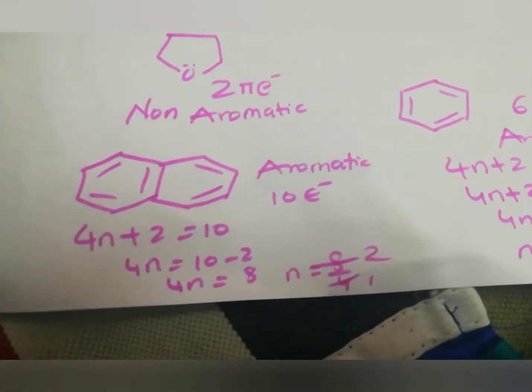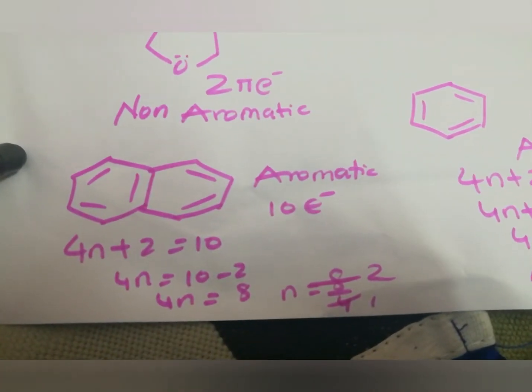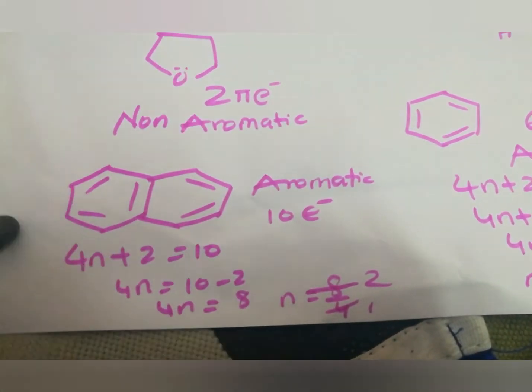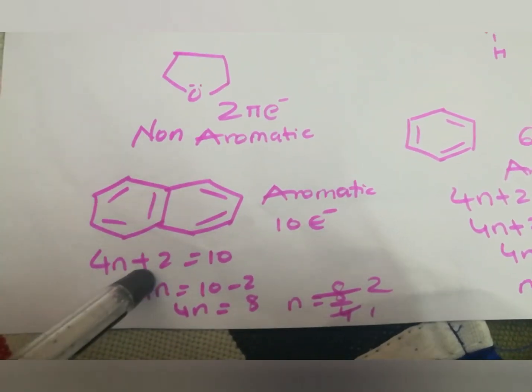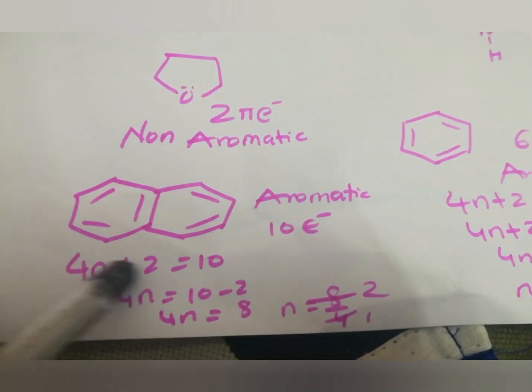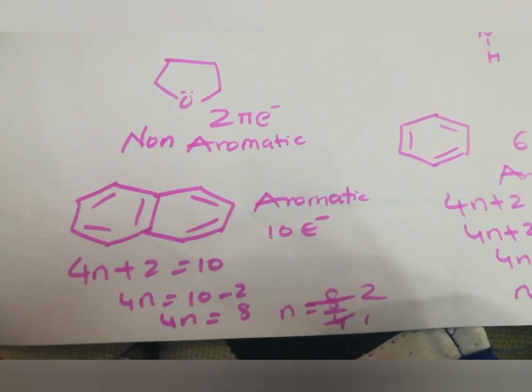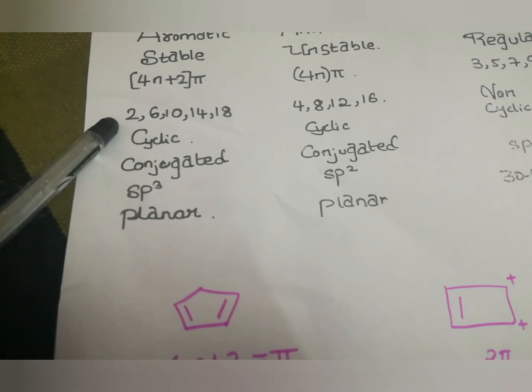Whereas, in this case, naphthalene compound, total electrons are 10. The formula we know is 4n plus 2 equals to pi electrons. Therefore, it comes to 10 and we get n equals 2, which is nothing but an aromatic compound.